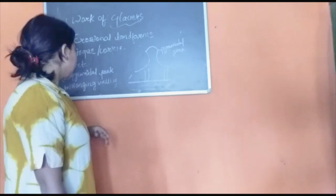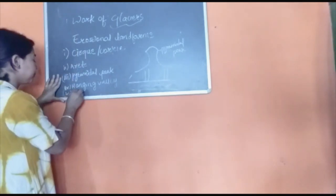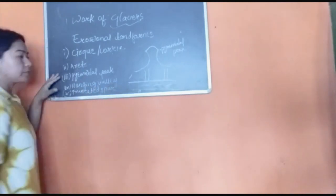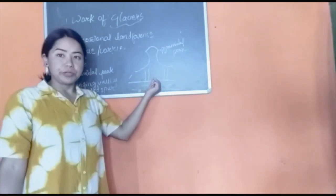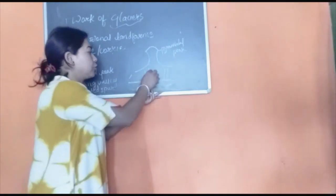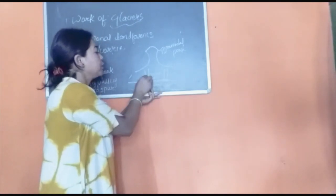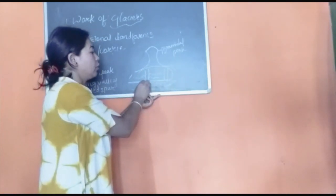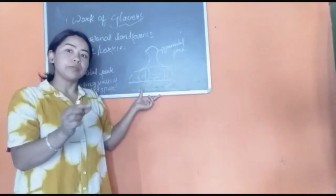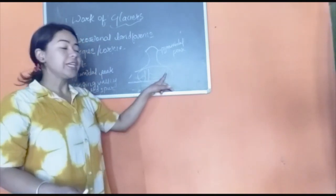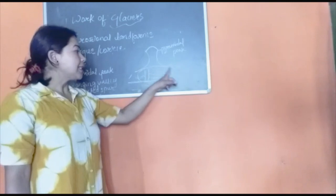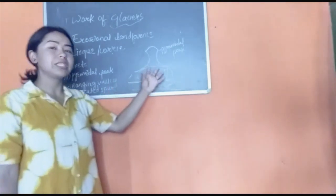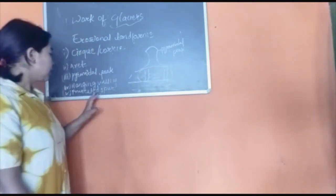After hanging valley we have truncated spur. From the tributary valley, ice also tends to move outwards, forming small channels. The spur which is dissected and cut by small streams or rivers coming out from these tributary channels or valleys is known as a truncated spur, because it is cut into several parts.